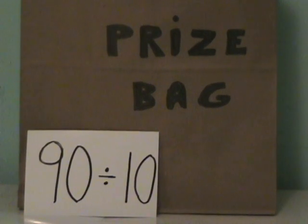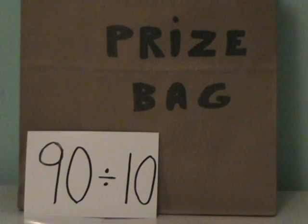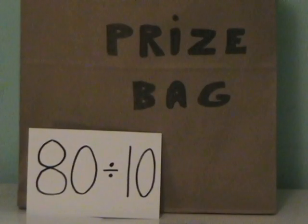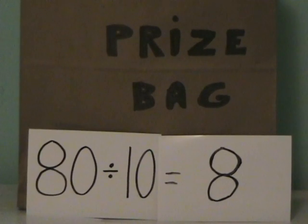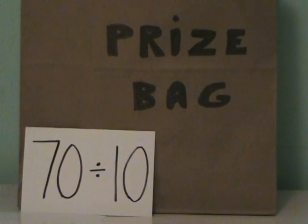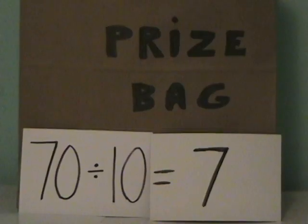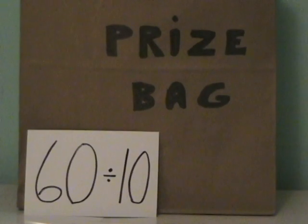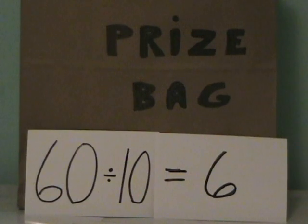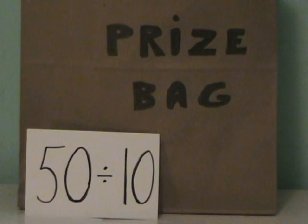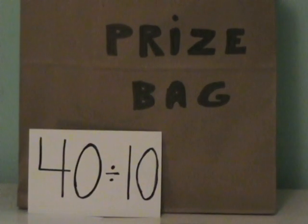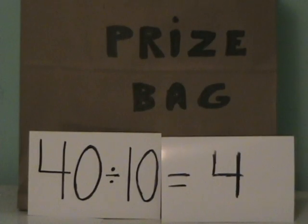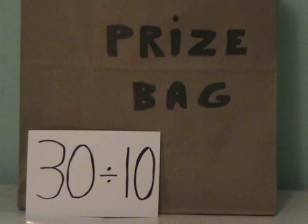Okay, here we go. 90 divided by 10 is 9. 80 divided by 10 is 8. 70 divided by 10 is 7. 60 divided by 10 is 6. 50 divided by 10 is 5. 40 divided by 10 is 4. 30 divided by 10 — that's right — 30 divided by 10 is 3.